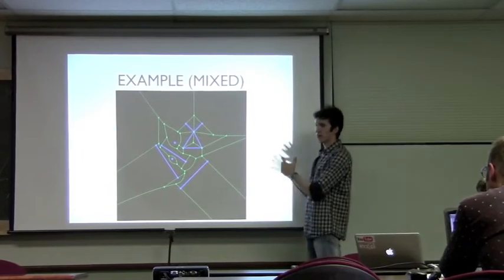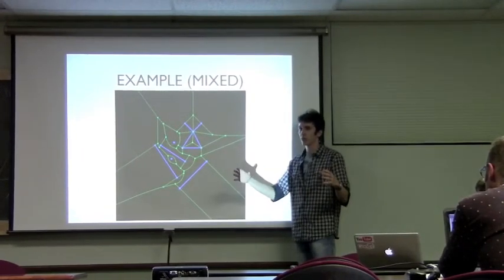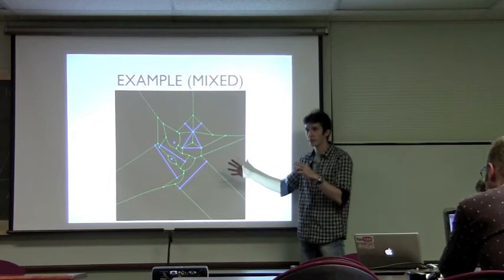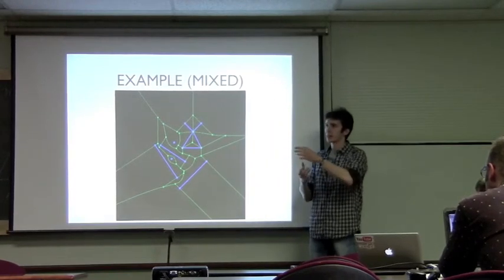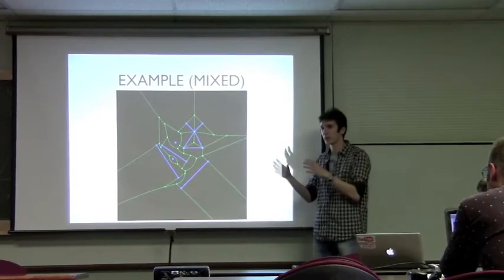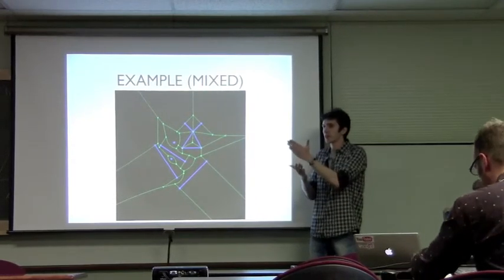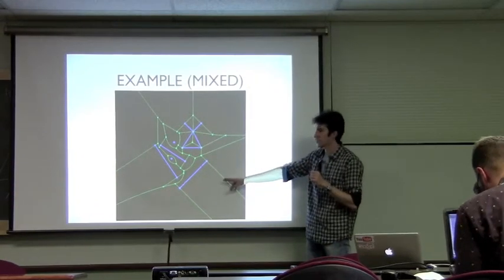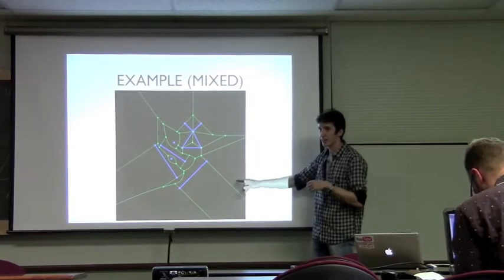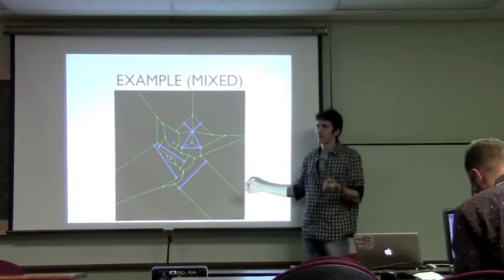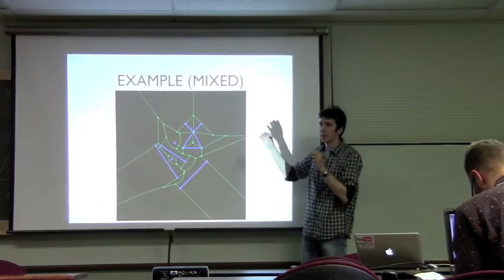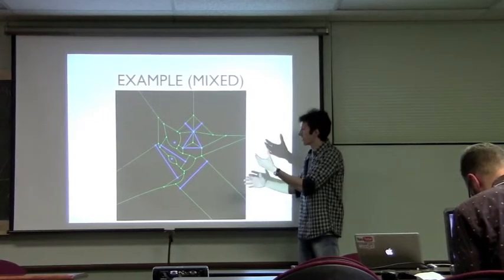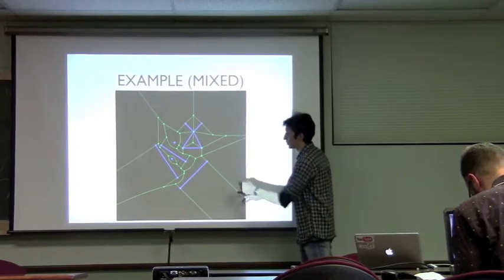We represent each segment as the segment itself and both endpoints as separate sites. If you have a segment and a point, you need to build an edge equidistant from both — that would be a perpendicular line going through the endpoint. The distance from points very close to the endpoint is the same for both the segment and the endpoint, because they are infinitely close.